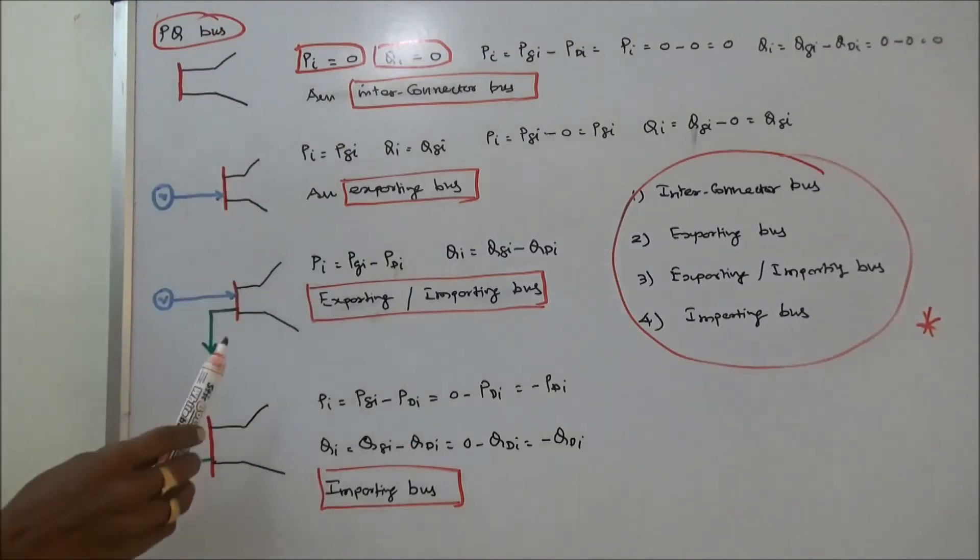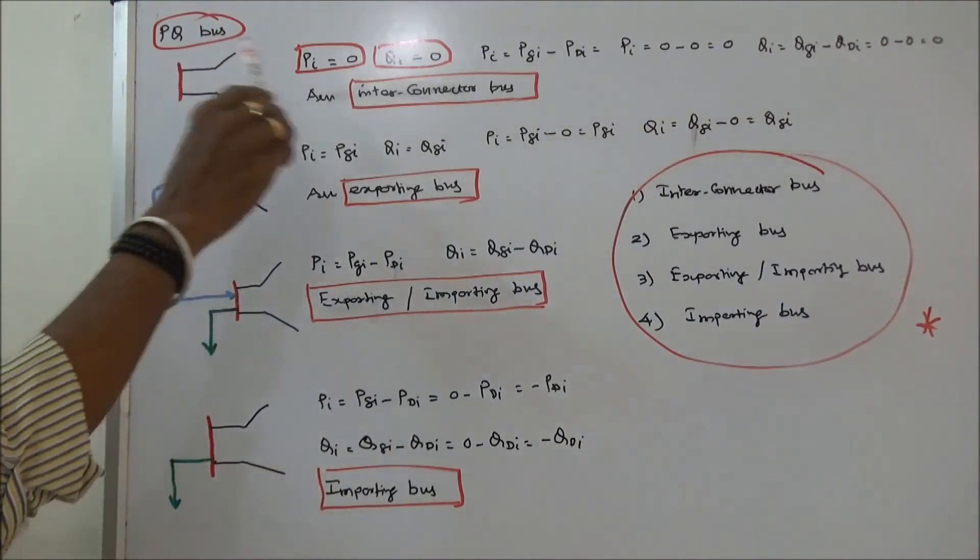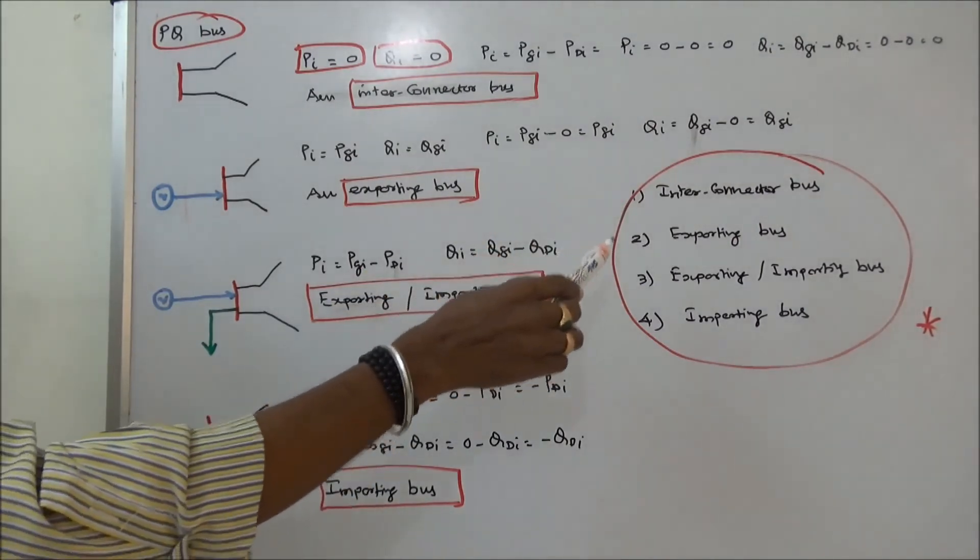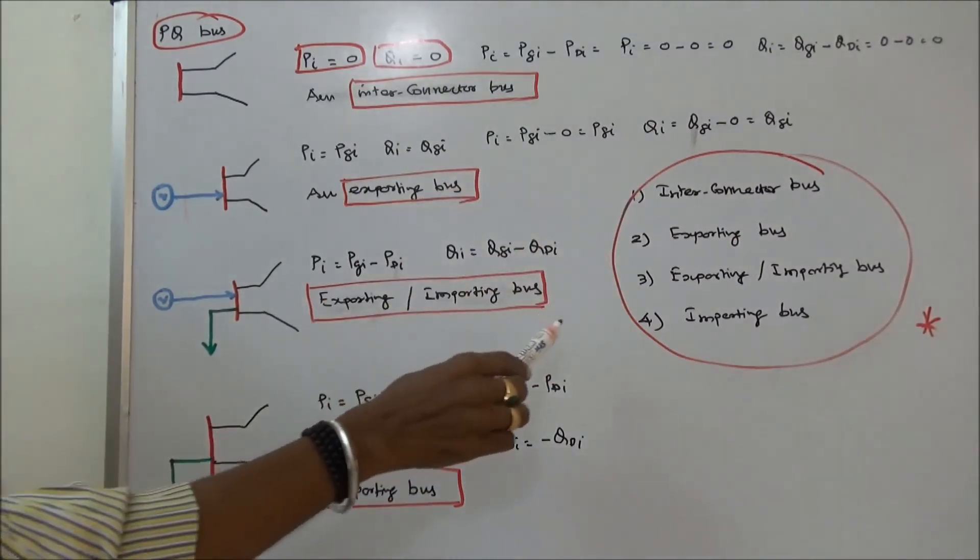PQ bus or load bus can be classified into four. One is interconnector bus. Second is exporting bus. Third is exporting or importing bus. Fourth is importing bus.